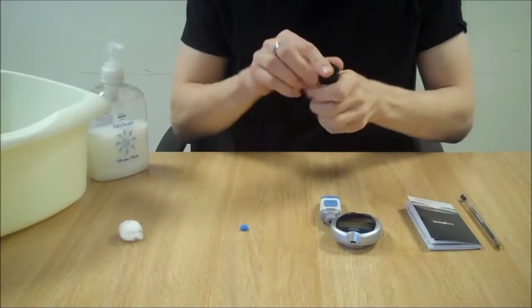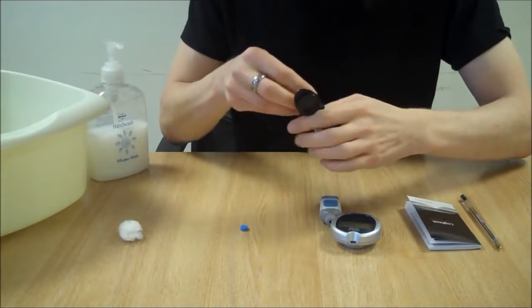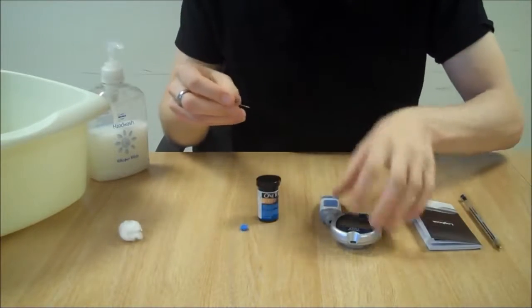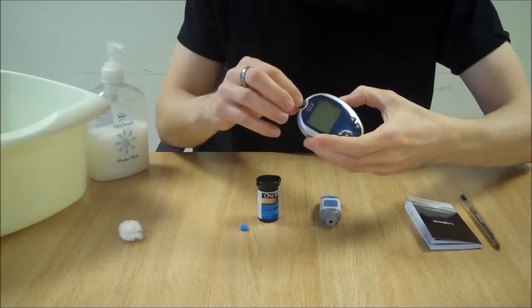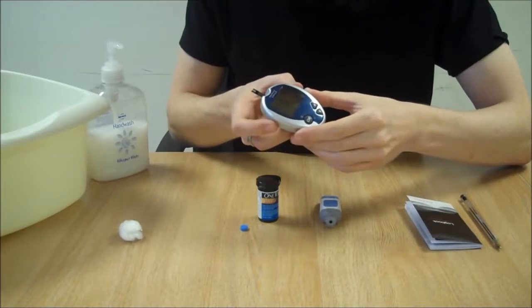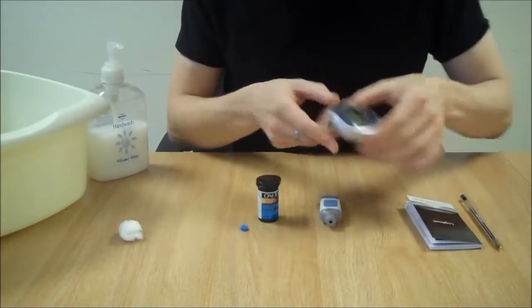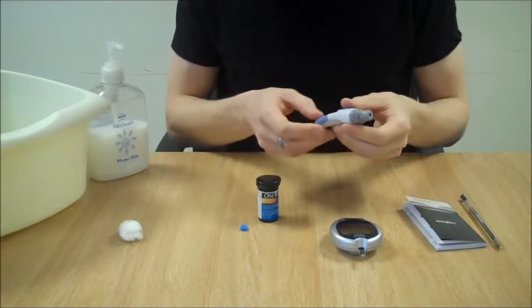Load a test strip into the blood glucose meter. This one switches on as you put the test strip in.